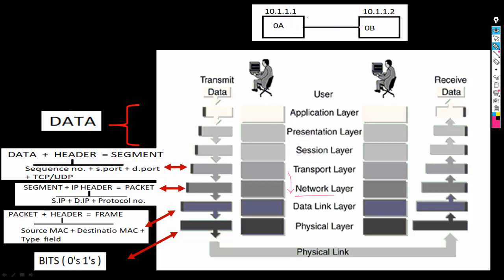After the transport layer, data moves to the network layer where the IP protocol works. The IP protocol will add its IP header to the segment and this format will be called a packet. This header includes source IP, destination IP, and protocol number — either TCP or UDP. The protocol number of TCP is 6 and the protocol number of UDP is 17. So segment plus IP header equals a packet.